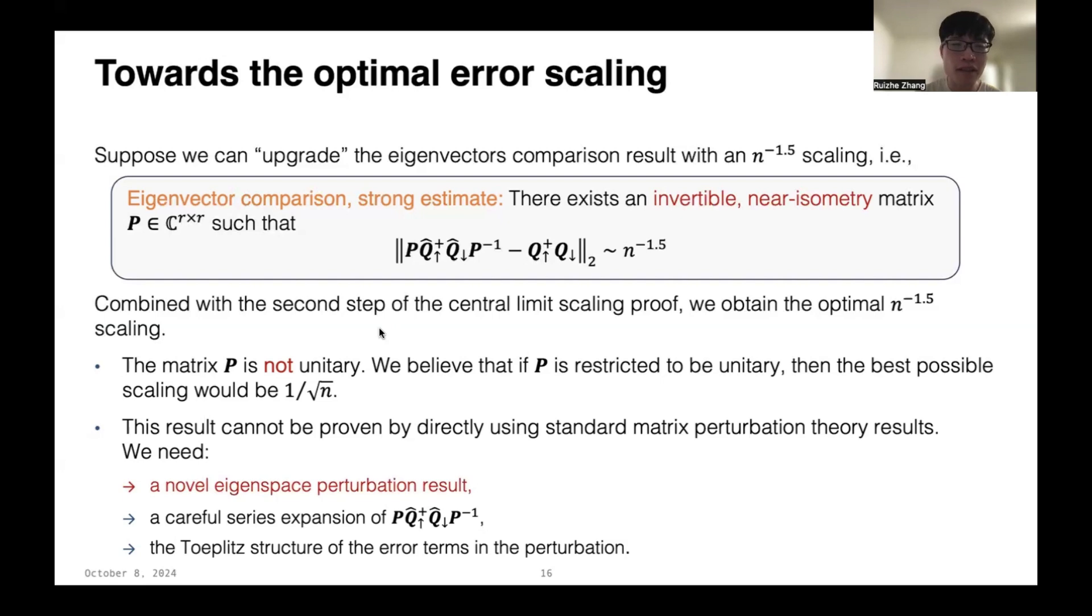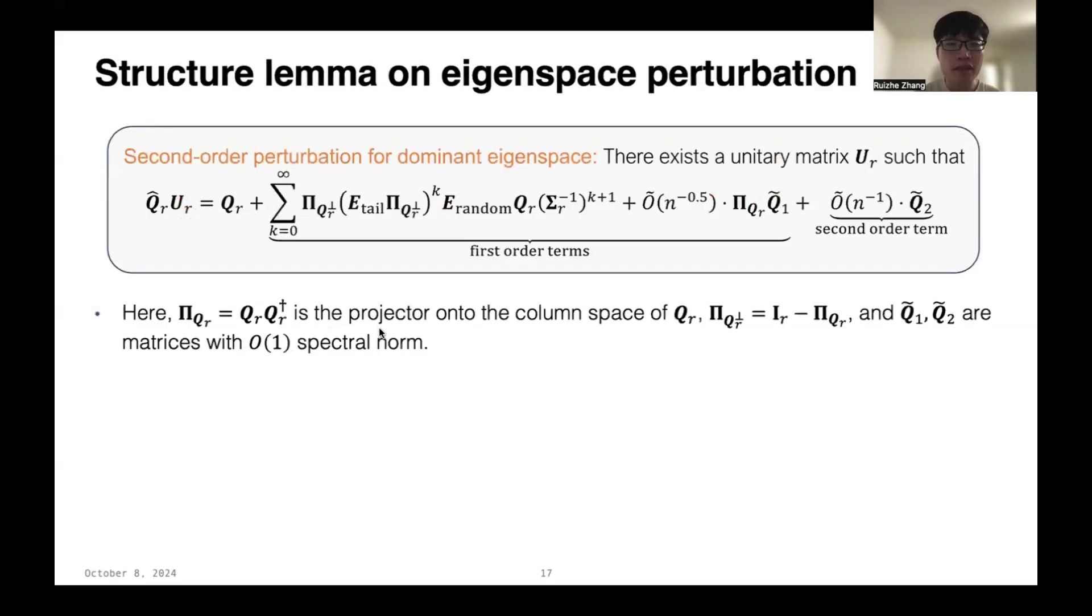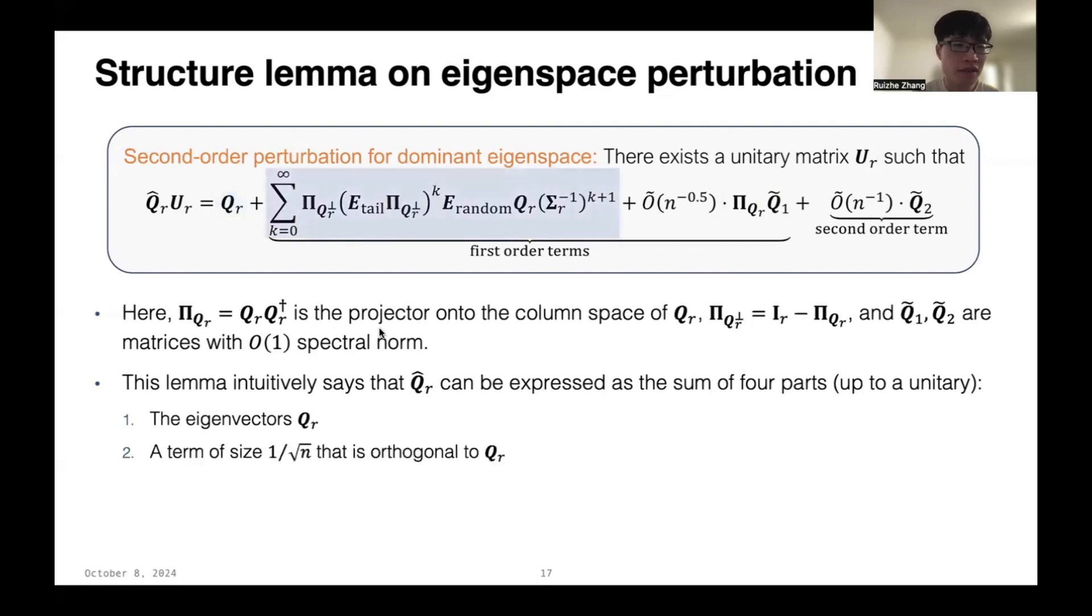So, due to the time limit, let me only introduce our novel eigenspace perturbation result. Specifically, we prove the following structure results for the second-order perturbation for the dominant eigenspace. This lemma looks very complicated. But intuitively, it says that the perturbed eigenvectors Q̂_r can be expressed as the sum of four parts up to a unitary. The first part is the unperturbed eigenvectors Q_r, and the second part is a term of size 1 over square root of n that is orthogonal to Q_r. The third part is a term of size 1 over square root of n that is in the range of Q_r. And finally, there are some second-order terms of size 1 over n.